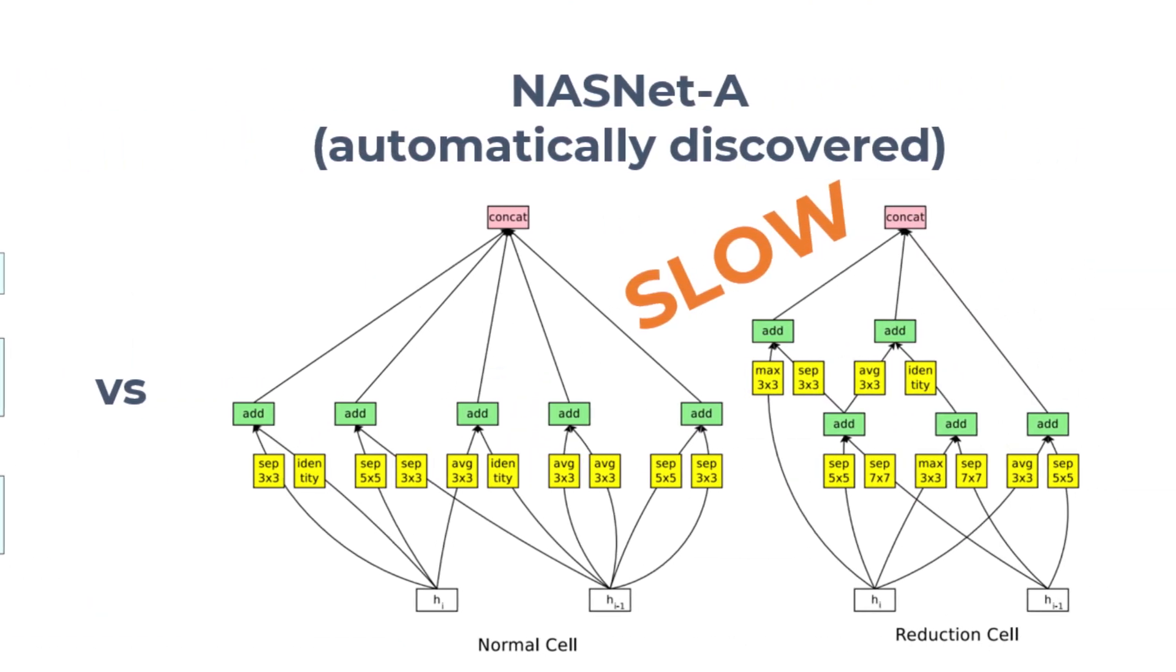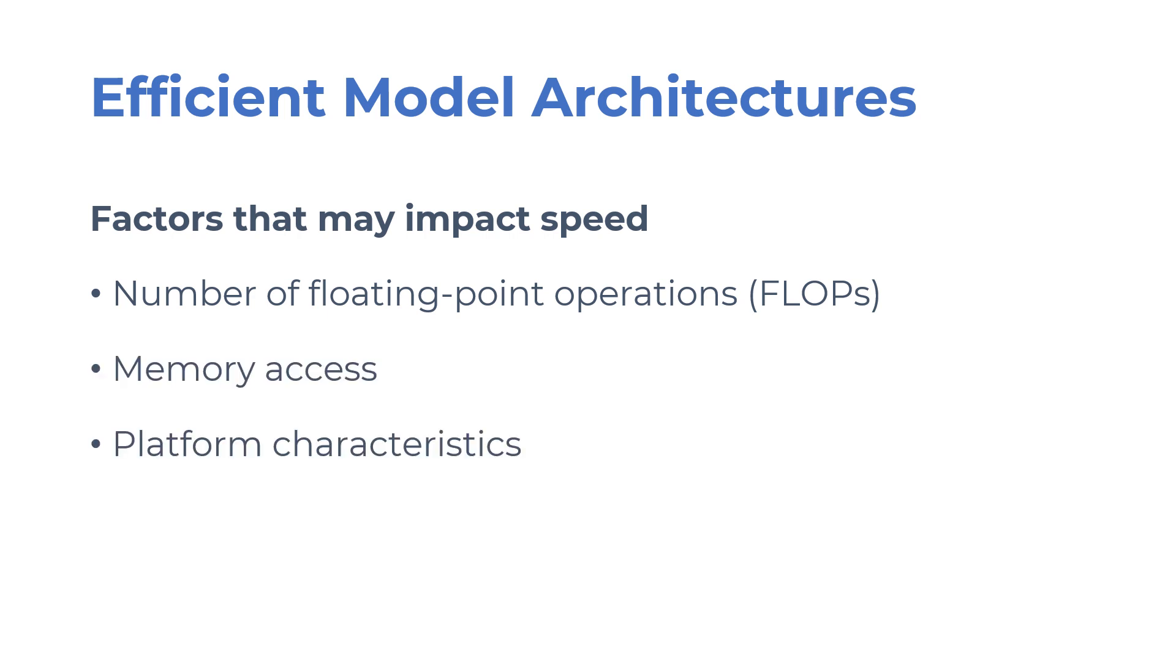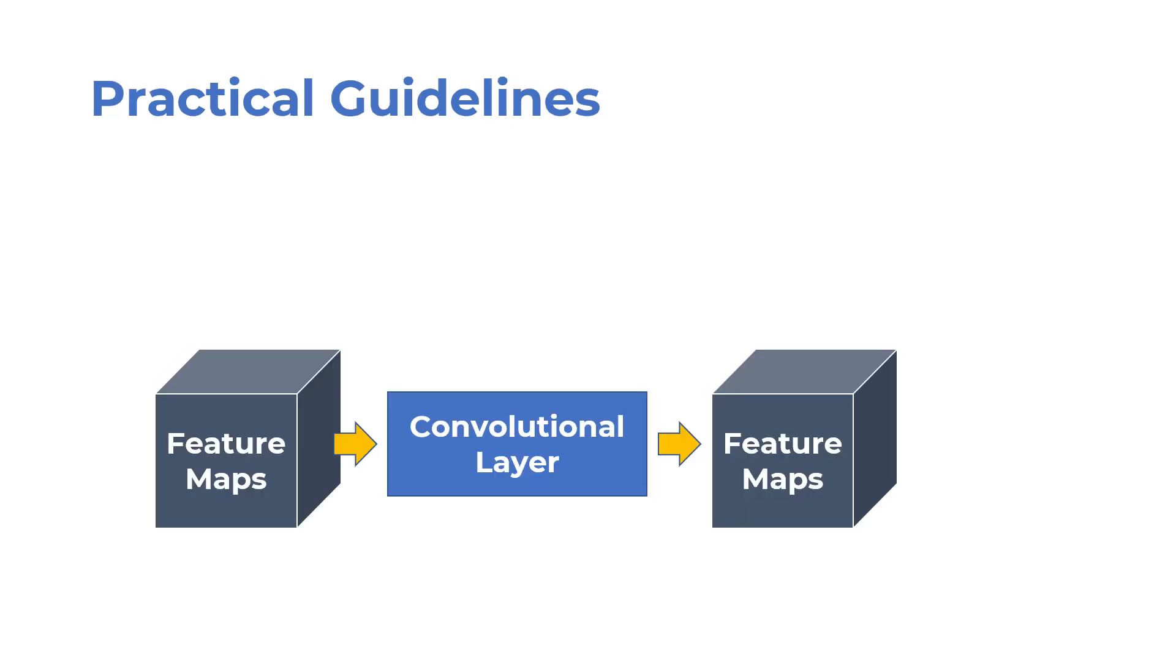This is because the speed of a model depends not only on the number of floating-point operations, but also on memory access costs and platform characteristics. Keeping those in mind, the ShuffleNet V2 paper proposes some guidelines to design efficient model architectures optimized for inference speed.